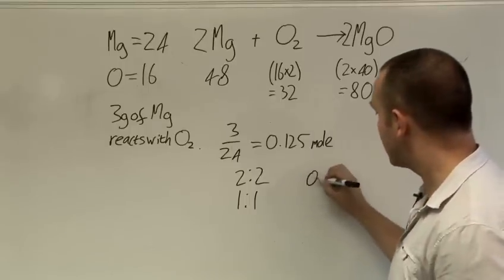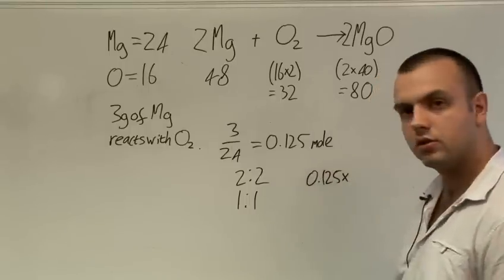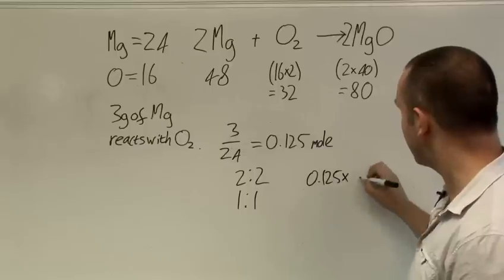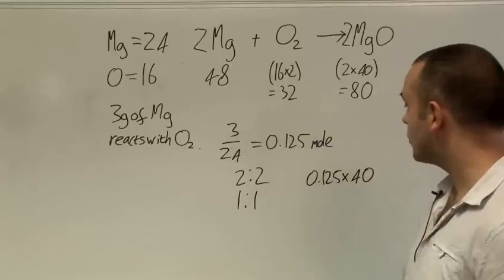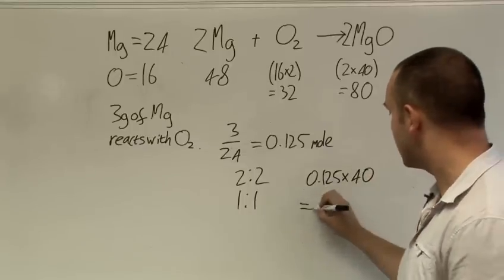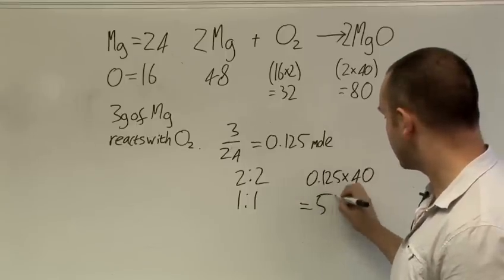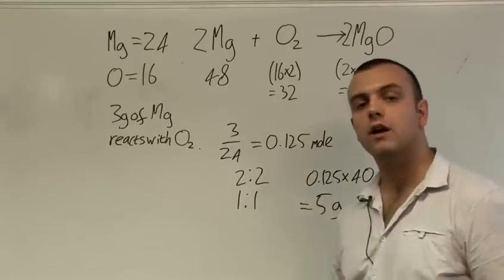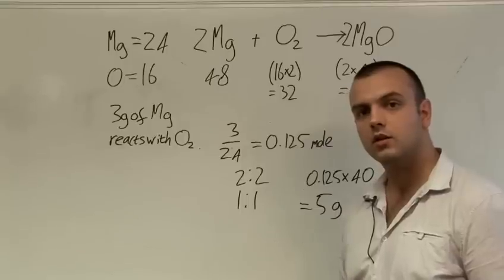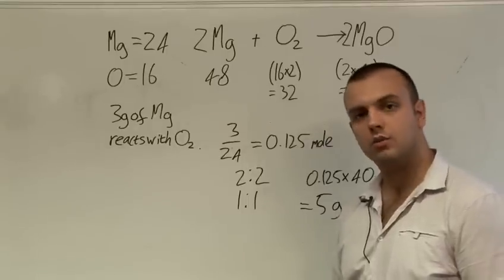So 0.125 which is the number of moles times the mass of 1 mole which is 40 is 0.125 times 40 which is 5. So we have 5 grams of magnesium oxide from 3 grams of magnesium reacting with oxygen.